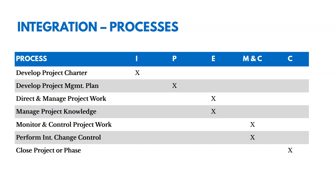There's developing the project charter — you're going to do that in initiating when you're kicking the project off. Then in planning, you're going to be developing the project management plan, which is probably one of our most foundational project management documents. In executing, you're going to direct and manage the project work and manage project knowledge. Then monitor and control project work and perform integrated change control are in monitoring and controlling. And then we're going to close the project or phase at the end.